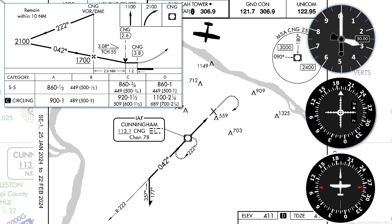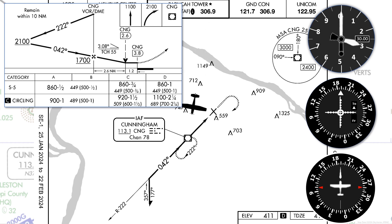As we fly inbound, we keep the needle centered by chasing it and making wind corrections if necessary. The needle will swing out, and as we overfly the station, the flag will disappear. This is how we know we've arrived at Cunningham.